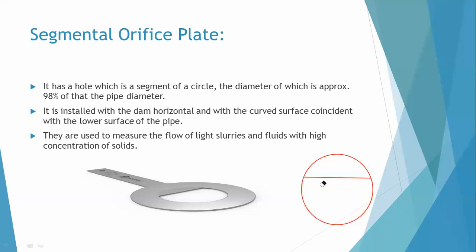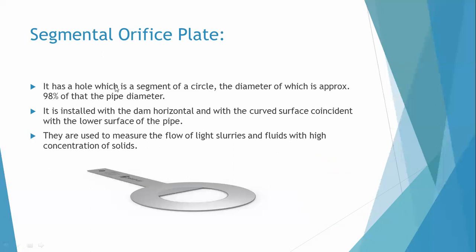The segmental orifice plate has a hole which is a segment of the circle. If you draw a line across a circle, the portion cut off is called a segment of the circle. The hole in a segmental orifice plate is shaped as a segment of a circle, the diameter of which is approximately 98% of the pipe diameter.